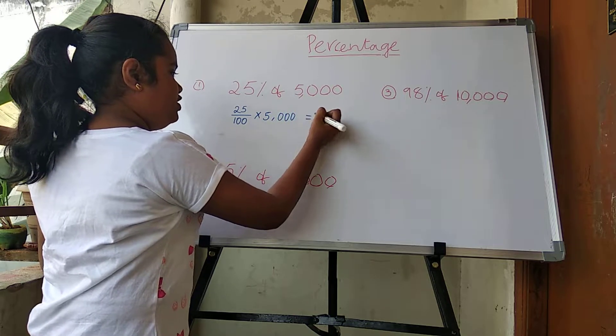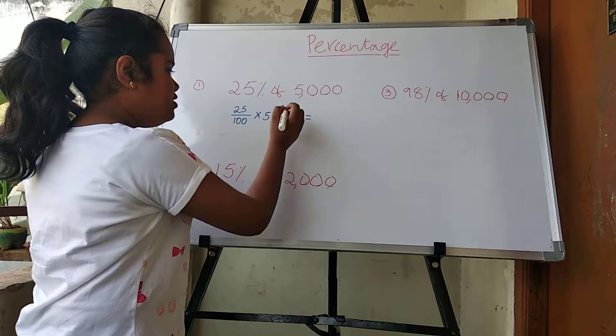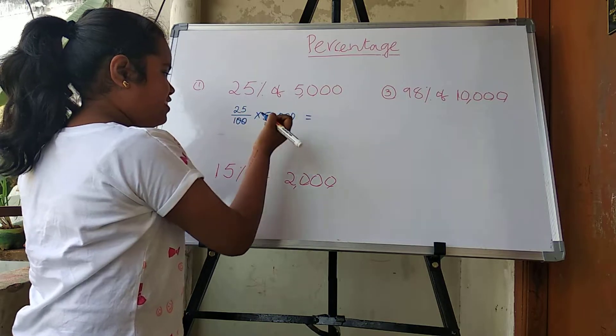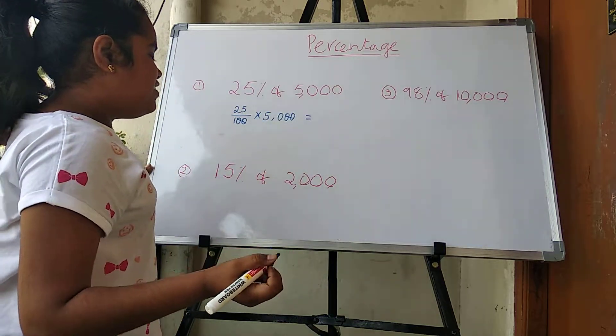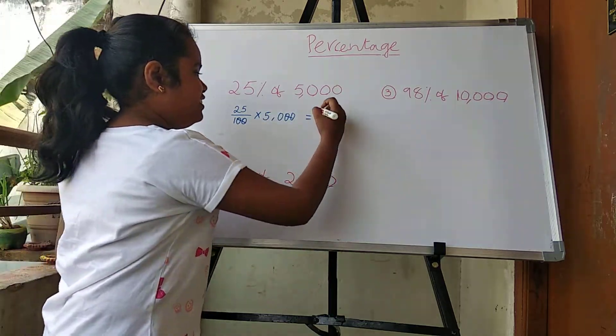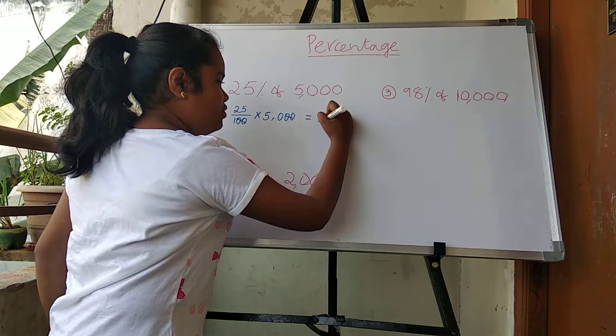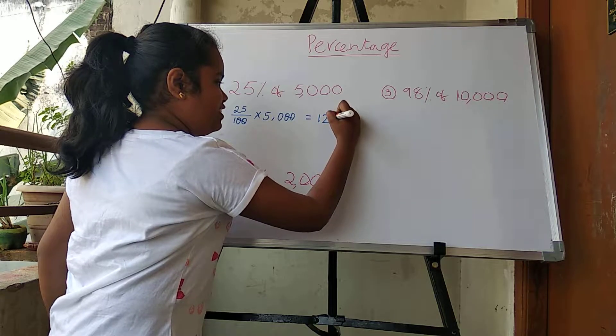So we should strike out two zeros here and here. Then we will get the answer as 1,250.